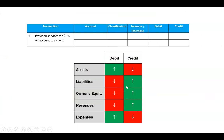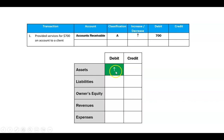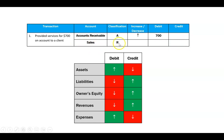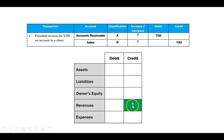You don't need to remember the why — just remember the rule, LONER. Let's apply it: provided services for $700 on account. Accounts receivable is affected — that's what we call it when a client owes money for services not yet paid. It's an asset that's increasing, so it goes on the debit side. We also need a credit — this is a sale, which is a revenue account, and sales are increasing, so that's a credit. One debit, one credit.